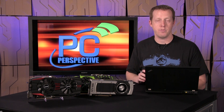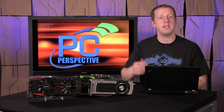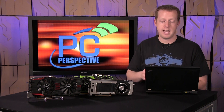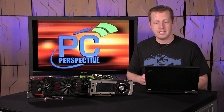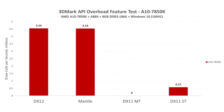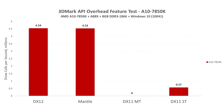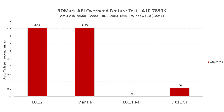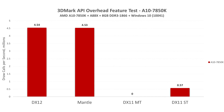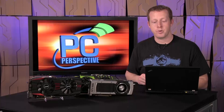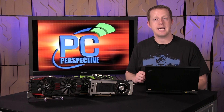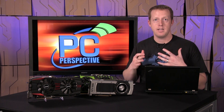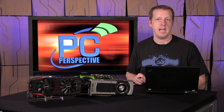We also had to give some love to APUs, which we think will see even more potential benefit from DX12. On an A10-7850K, DirectX 11 single-threaded results are just over 500,000 draw calls per second, whereas with DirectX 12 and Mantle we're at 4.5 million draw calls per second — another seven to eight times improvement in API capability.